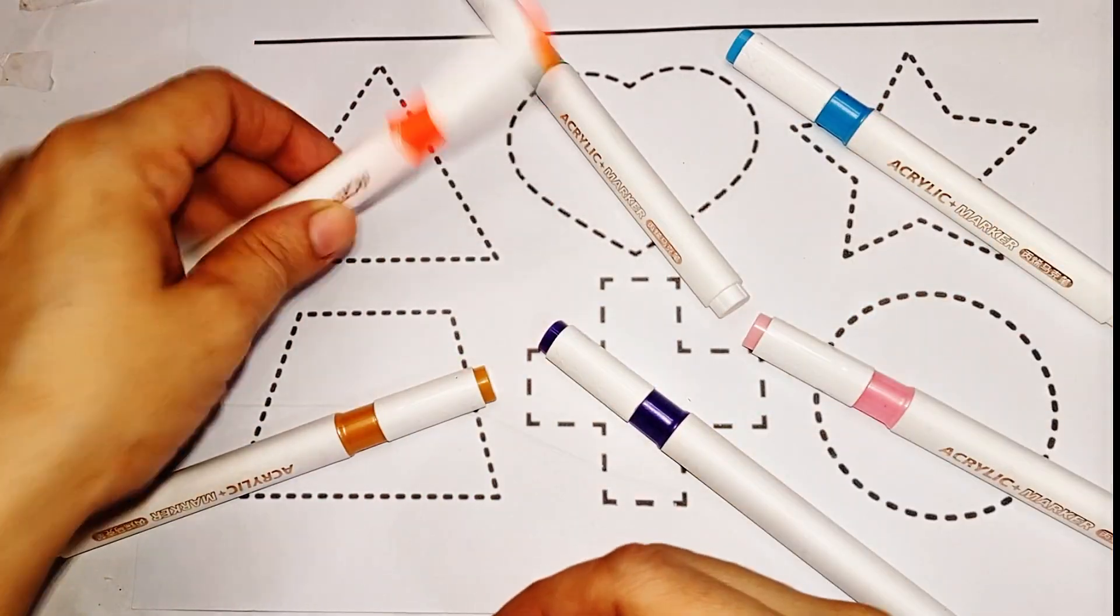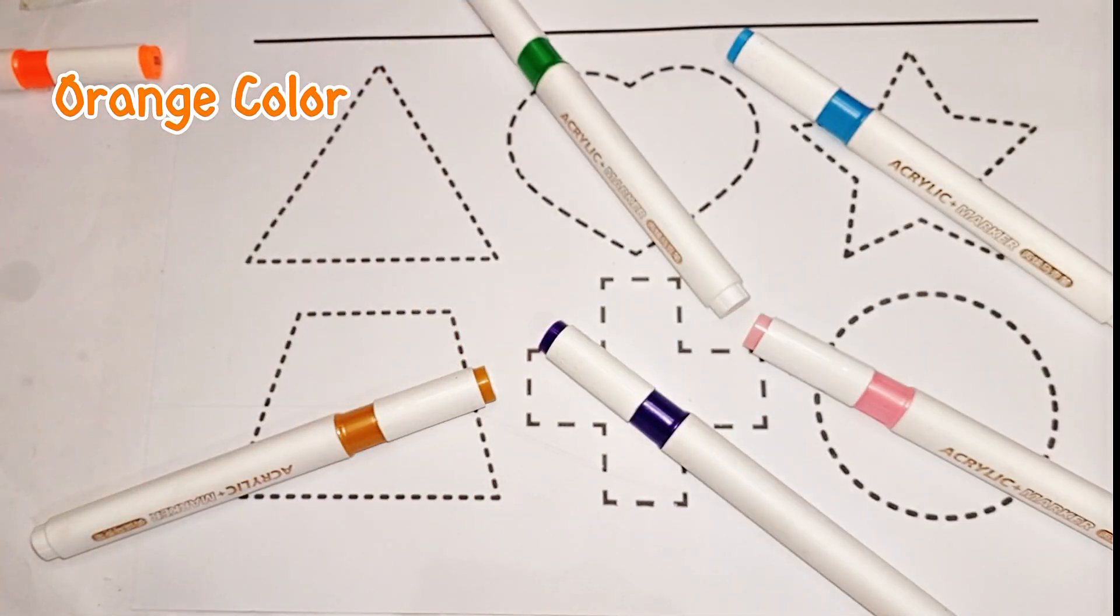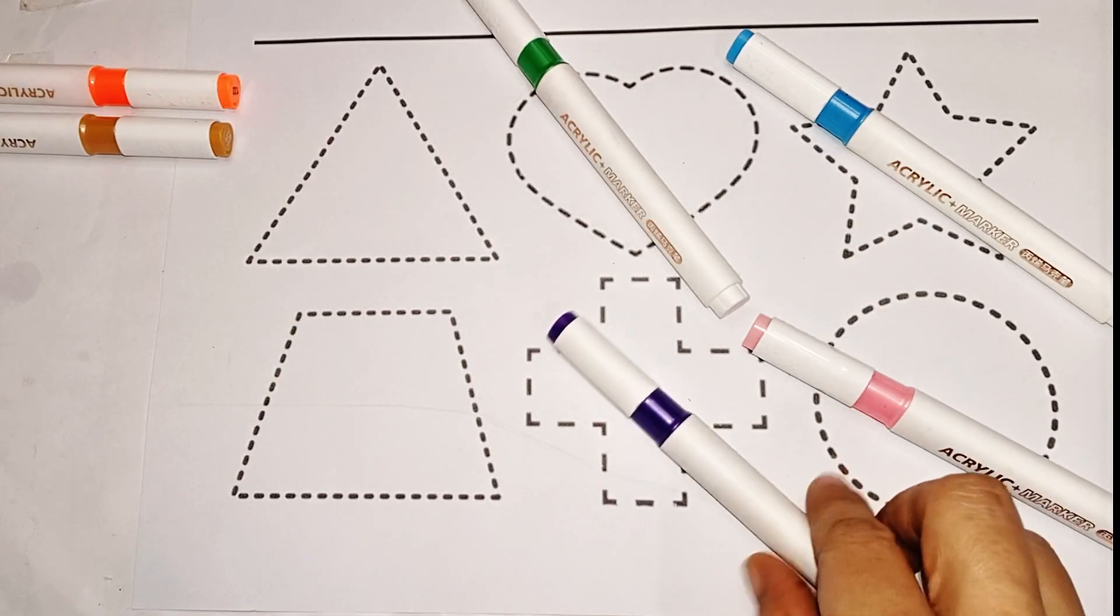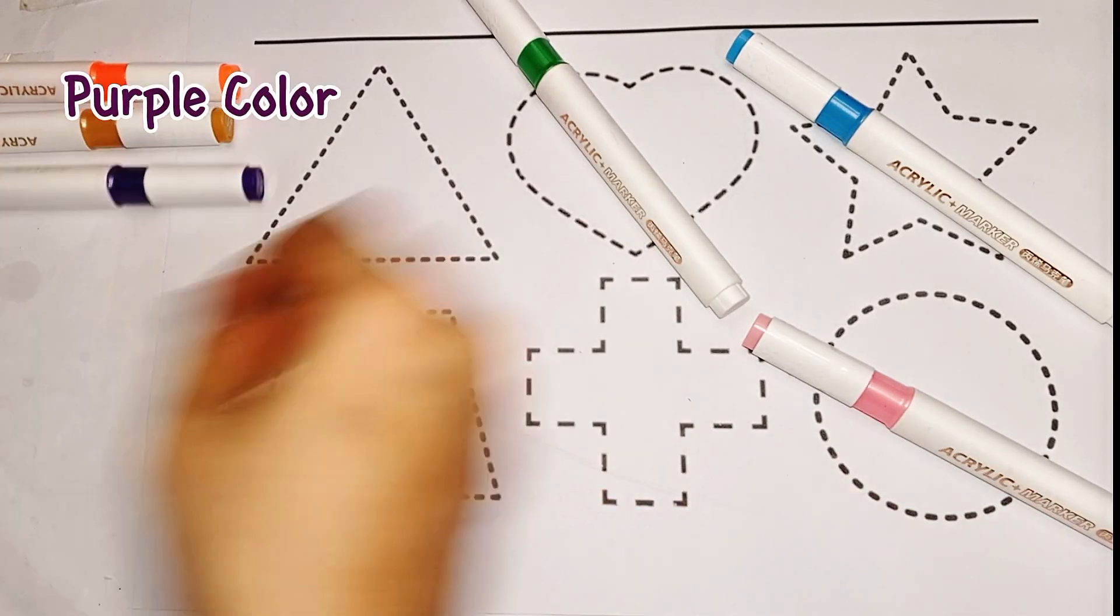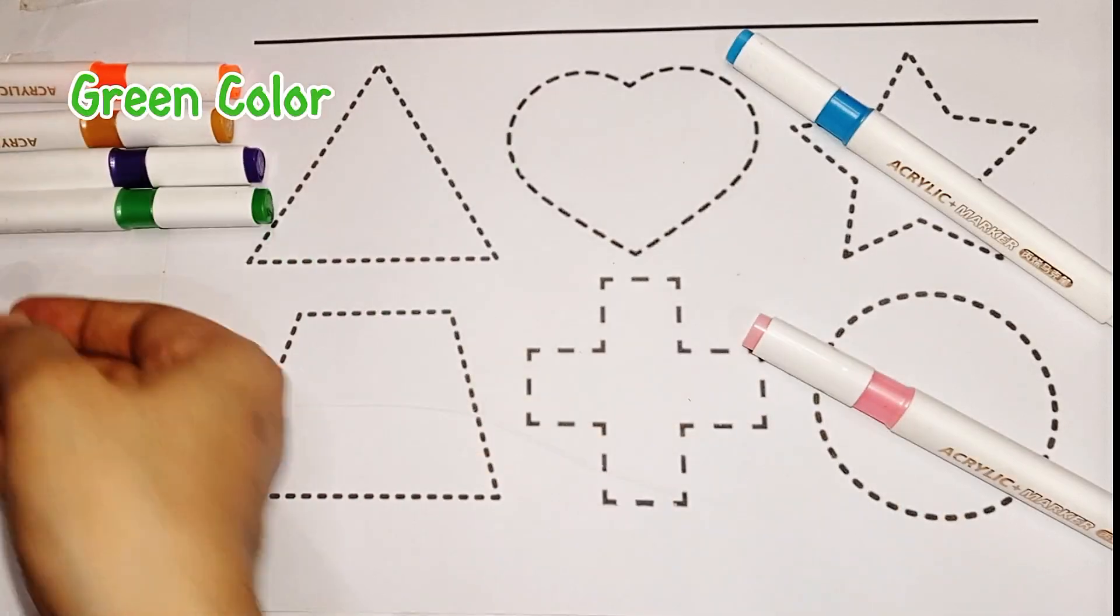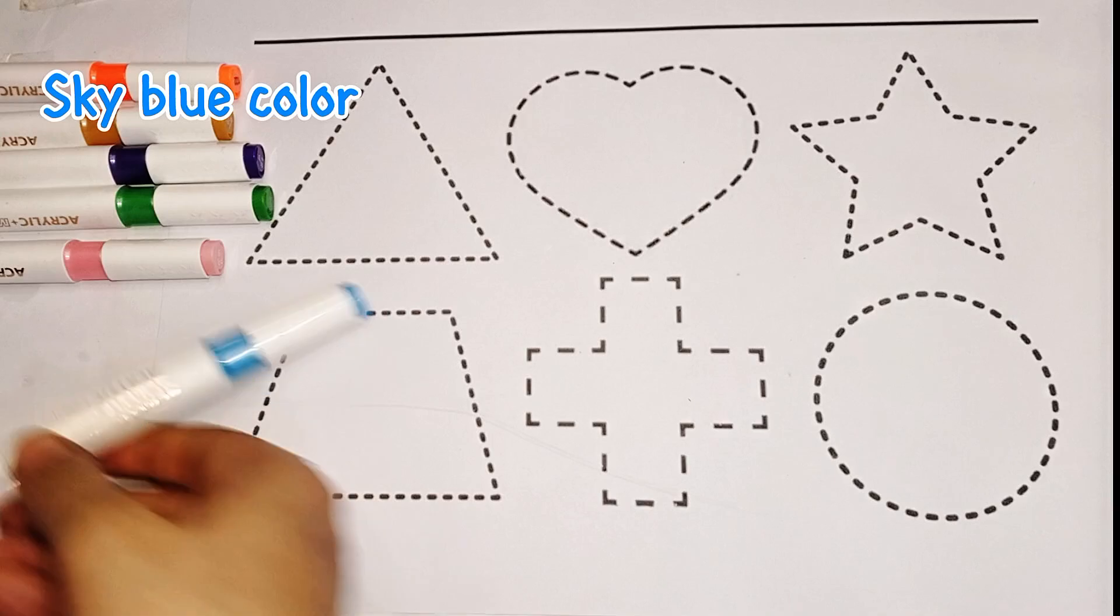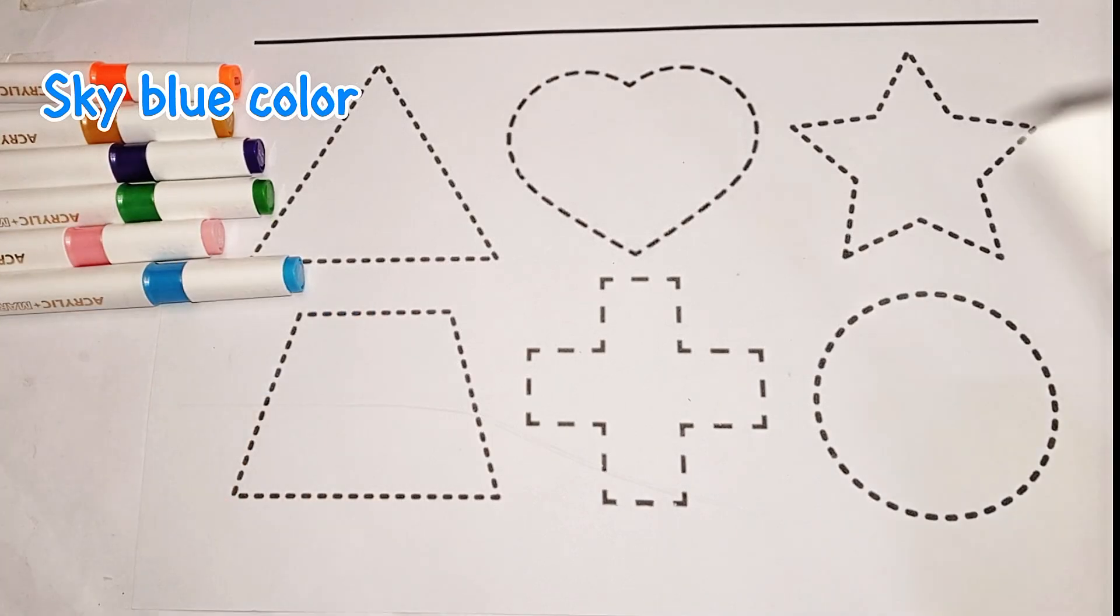Let's learn colors name. Orange color, golden colors, purple color, green color, pink color, sky blue color, black color.